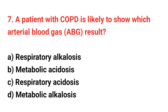Question number 7: A patient with COPD is likely to show which arterial blood gas result? The right answer is option C: Respiratory acidosis.